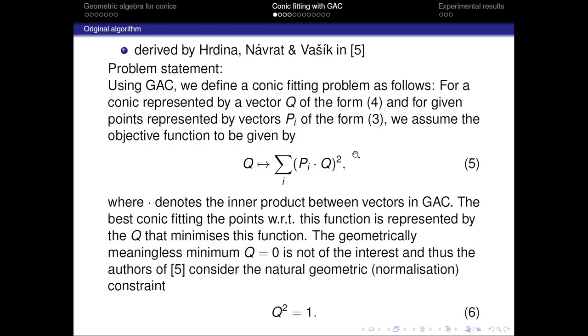We have some points represented by GAC vectors pi and we are looking for a GAC vector of the conic q that is somehow fitted among those points. The authors assumed the objective function to be of this form which stands for the sum of squared algebraic distances from the point pi to the fitted conic q.